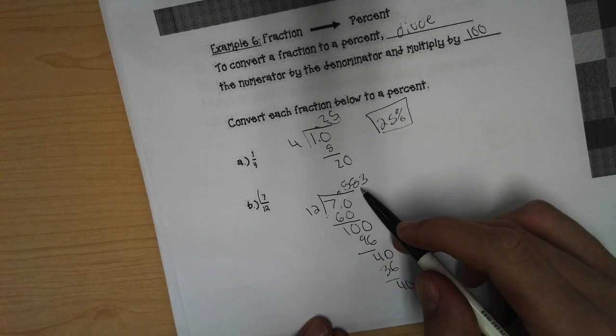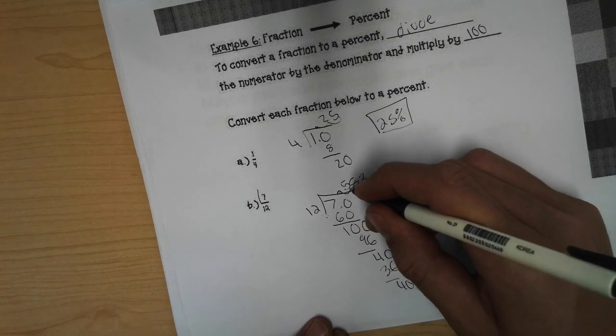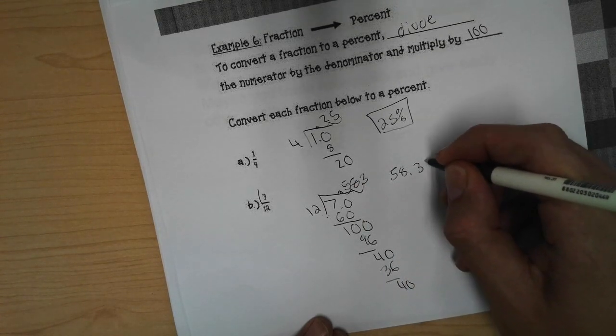So we have 583 thousandths. We want to convert this to a percentage. So we'll move it two places to the right. Get 58.3 percent.